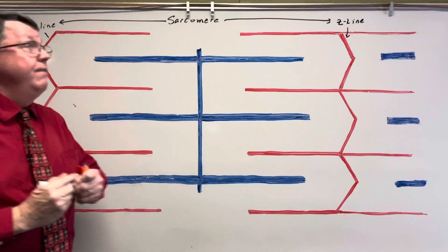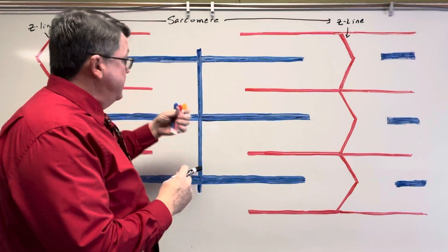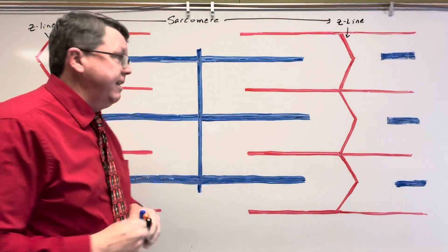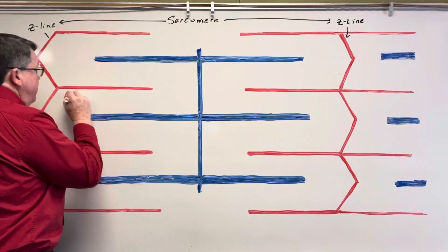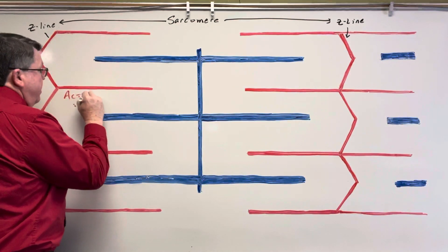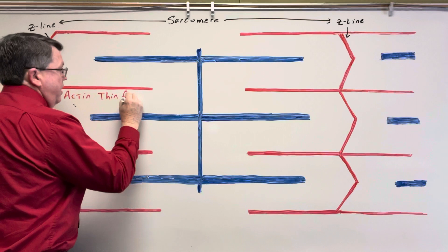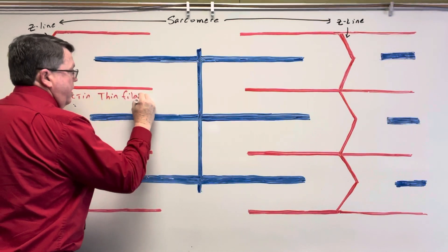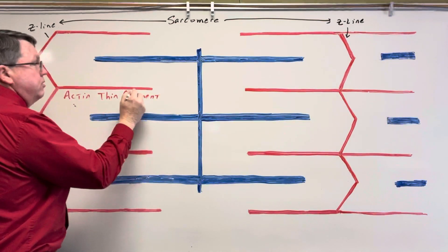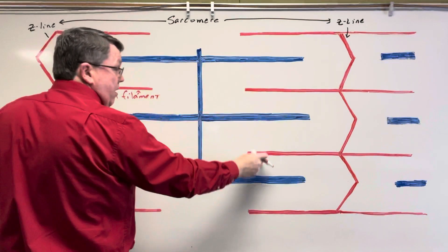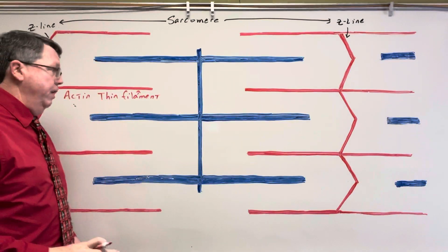Now if you notice, we also have these thin parts here, and these thin parts are going to be called actin. Actin is known as the thin filament. Everywhere you see these red lines is going to be actin, or the thin filament.